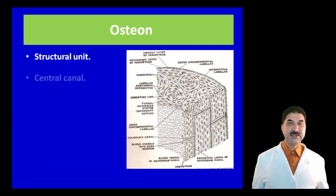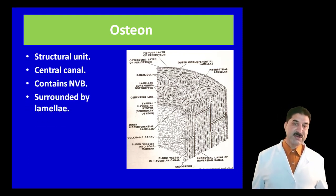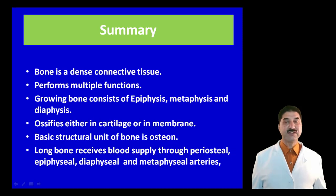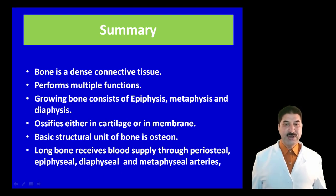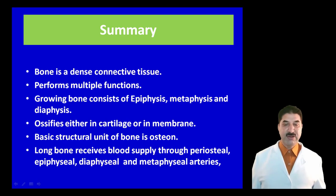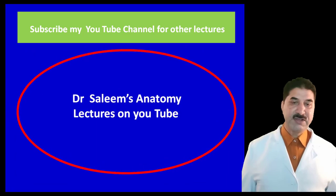To summarize: the basic structural unit of the bone is the osteon. Bone is a dense connective tissue that performs multiple functions. A growing bone consists of epiphyses, metaphyses, and diaphyses. It ossifies either in cartilage or membrane. A long bone receives its blood supply through periosteal, epiphyseal, diaphyseal, and metaphyseal arteries. Thank you for watching — do not forget to like, subscribe, and share this channel.